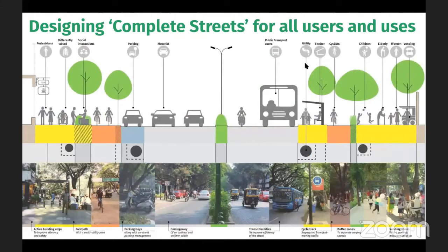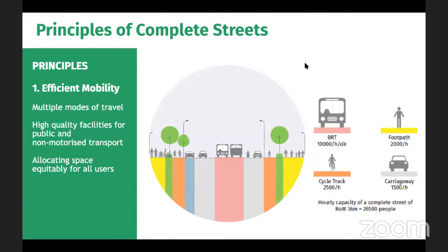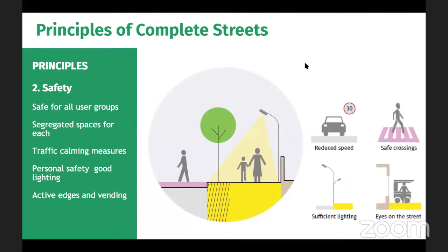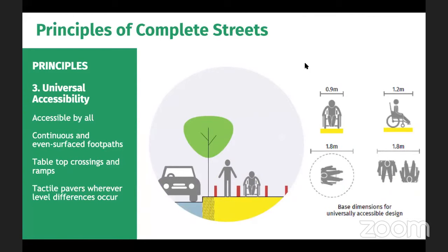One might wonder, what are the principles under which such streets should be designed? Firstly, it's very important to ensure that these streets have efficient mobility — allocating space equitably to all users and giving users the option of multiple modes of travel. A street should be designed with high quality facilities for both public and non-motorized transport. It needs to be safe, with traffic calming measures and safe crossings, as well as a focus on personal safety through good lighting, active edges, and vending on the streets. Streets also need to be accessible for all, through continuous and even surface footpaths, tabletop crossings and ramps, and tactile pavers where level differences occur.